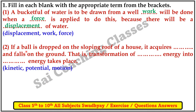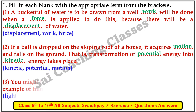Second, if a ball is dropped on the sloping roof of the house, it acquires motion and falls on the ground. This is transformation of potential energy into kinetic energy.